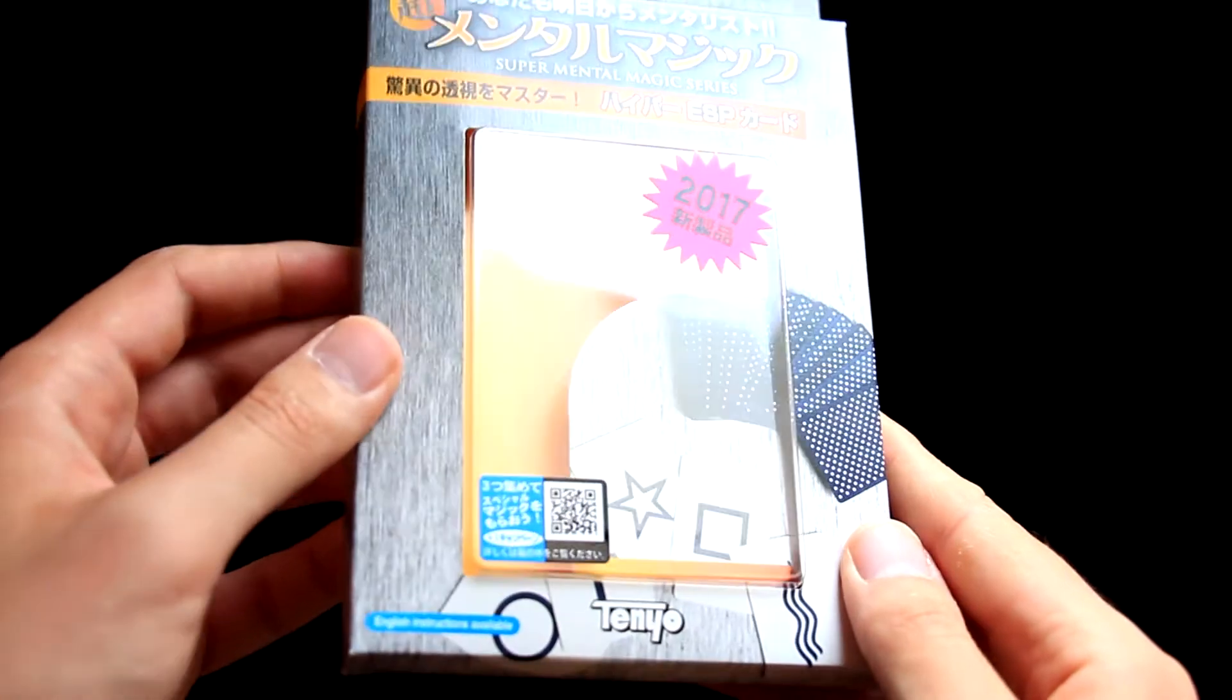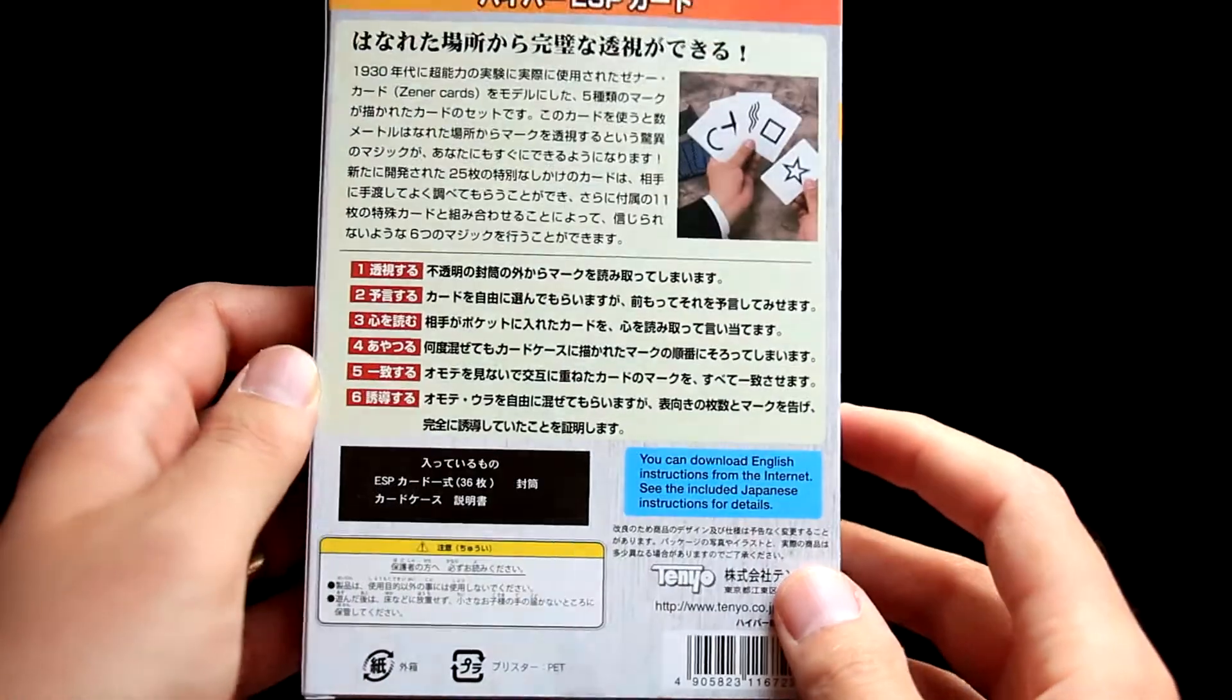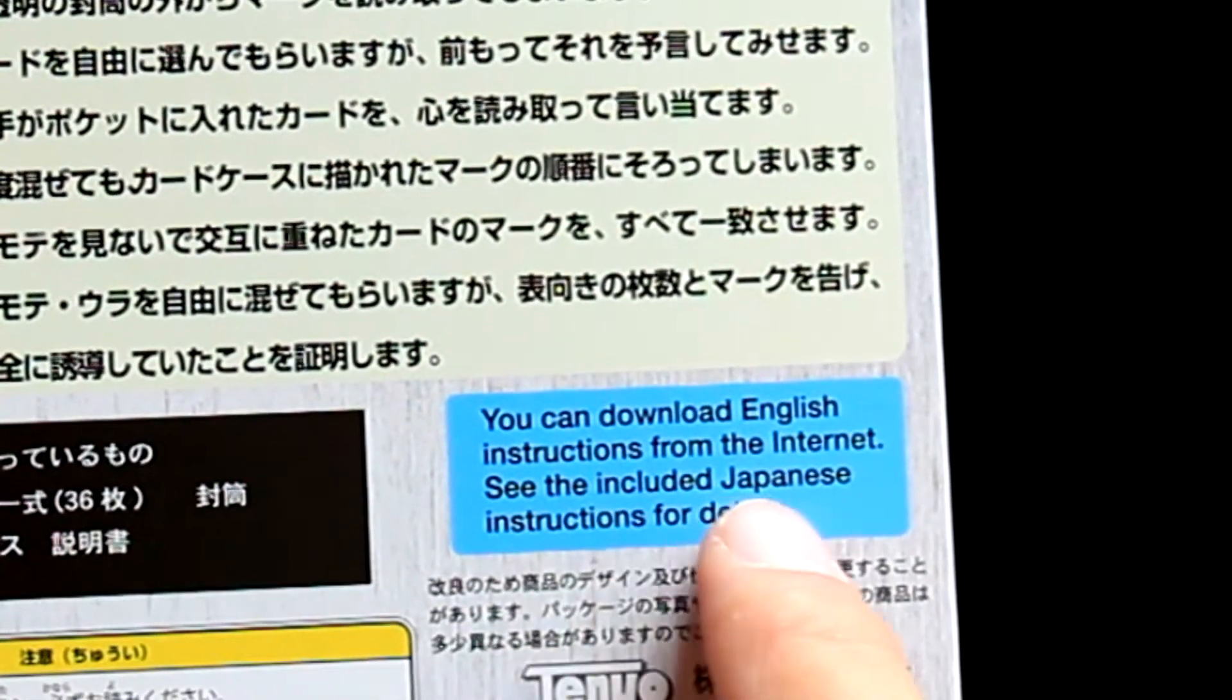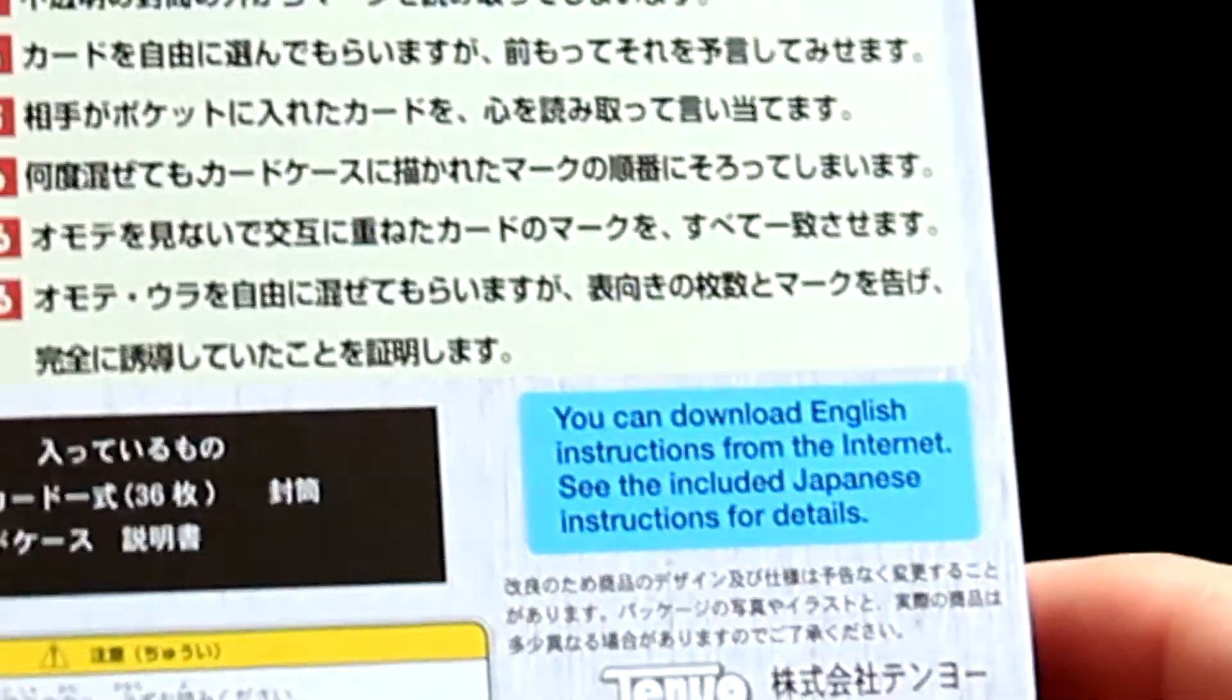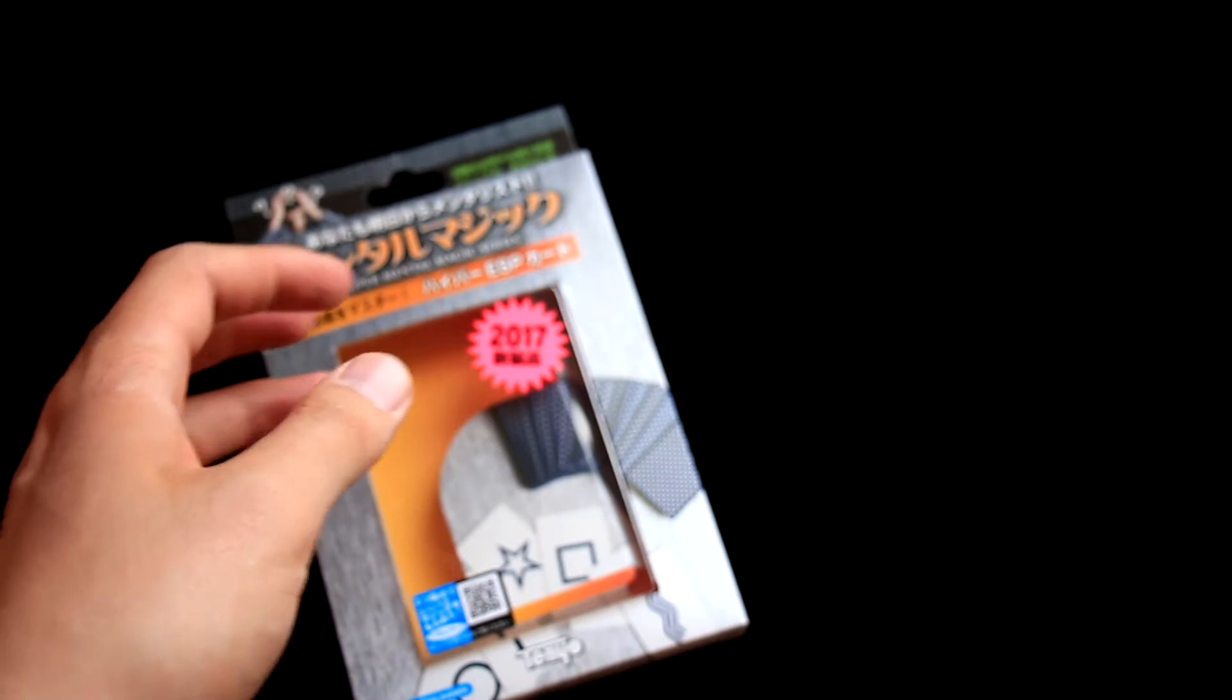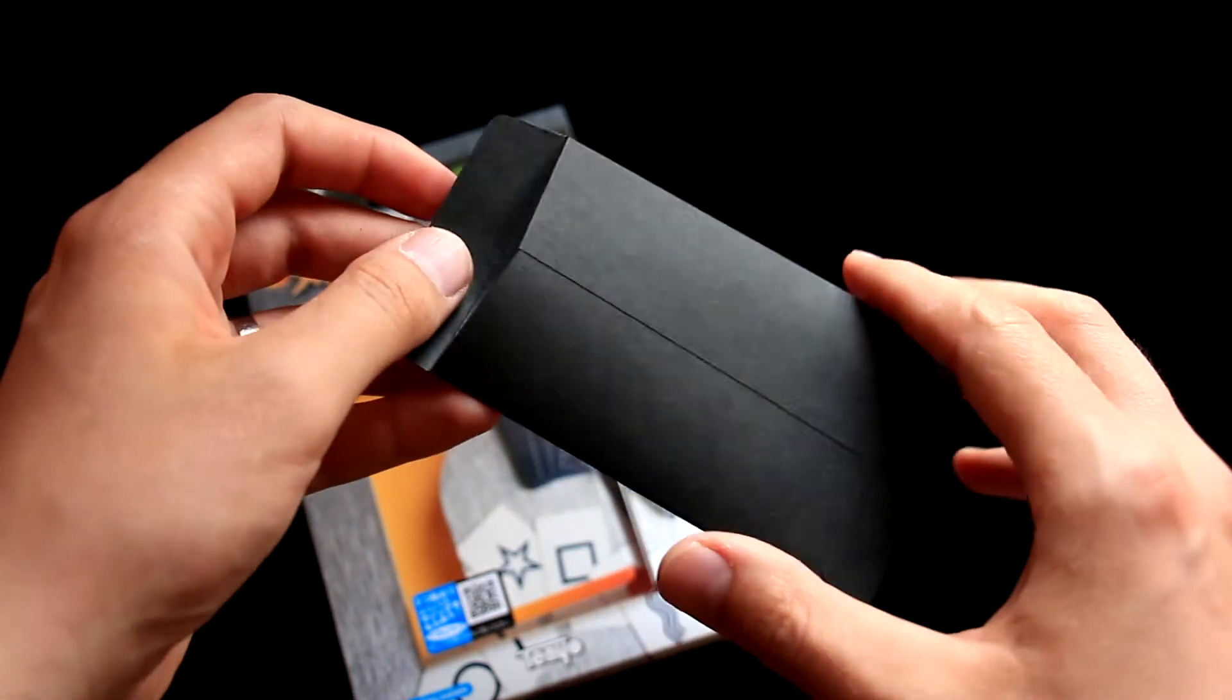You receive the deck in this bigger box. It is completely in Japanese, there are only a few English sentences. For example, here you can download English instructions from the internet, see the included Japanese instructions for details. This is the box and then we receive this black envelope, which is very cool for storing predictions.